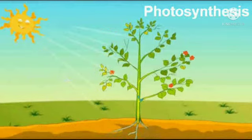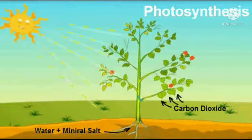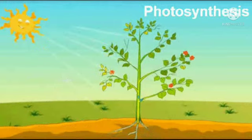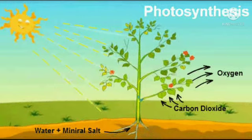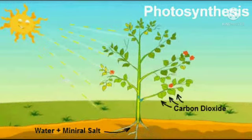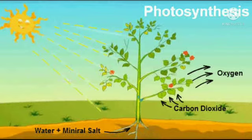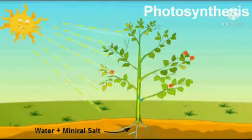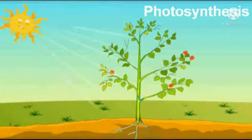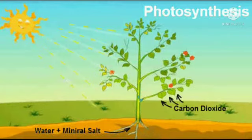Through photosynthesis, the plants make food with the help of chlorophyll, sunlight, carbon dioxide, and water. The prepared food is stored in the different parts of the plant.